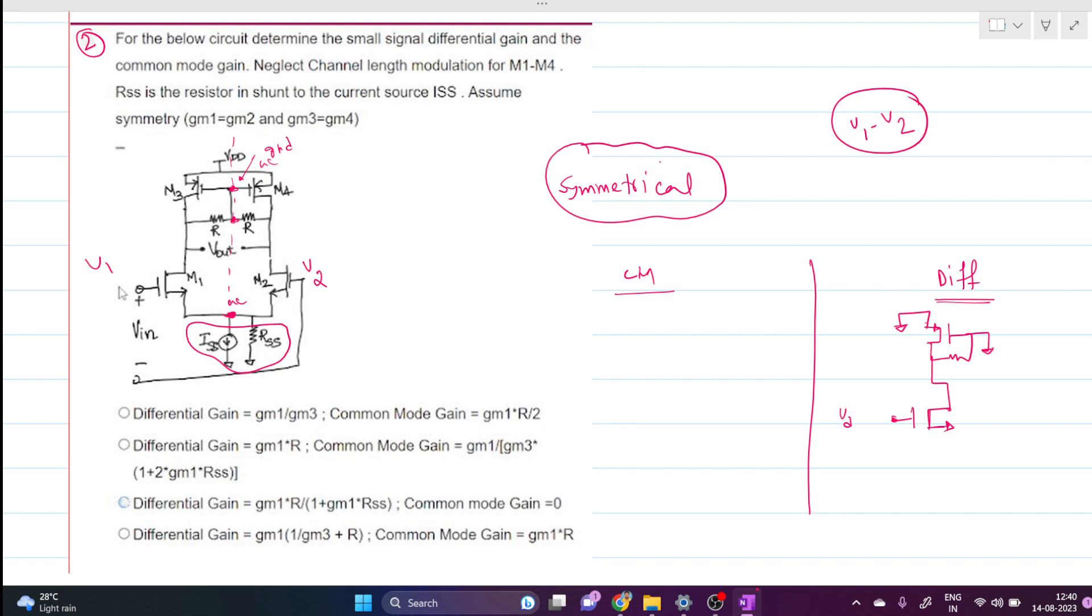Vd is nothing but, if this is V1 and if this is V2, our Vd is V1 minus V2. This is the differential voltage. This is also AC ground, so what is this voltage in terms of Vd? This is R and this is gm3.